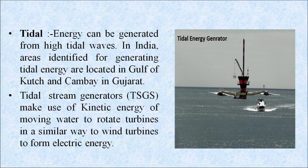Next is wind energy. The greater heating of earth by the sun at the equator than at the poles and the rotation of the earth set up flows of air called wind. Wind is an indirect form of solar energy and can be harnessed by wind turbines to generate electricity. Coastal areas of India are particularly suitable for generating electricity from wind energy. Wind turbines convert the energy of wind into electrical energy by means of rotation of blades. Next is tidal energy, which can be generated from high tidal waves. Areas identified for generating tidal energy in India are located in the Gulf of Kutch and Cambay in Gujarat. Tidal stream generators use the kinetic energy of moving water to rotate turbines, similar to wind turbines, to generate electrical energy.